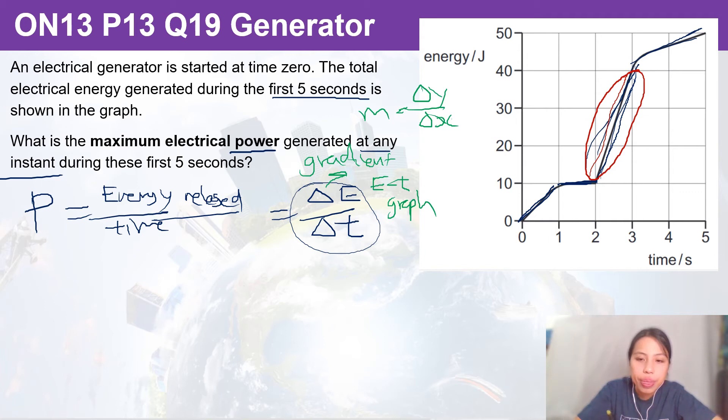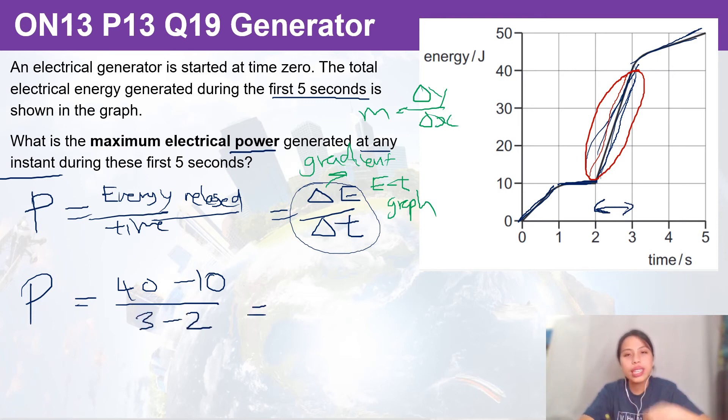Here the change in energy is going from 10 to 40, so 40 minus 10, final minus initial. And the change in time, delta t, is 3 minus 2, so just one second.